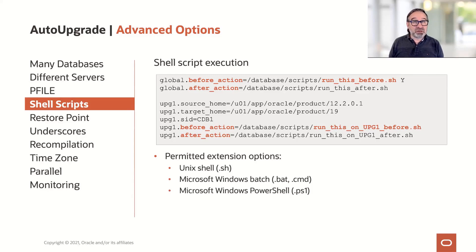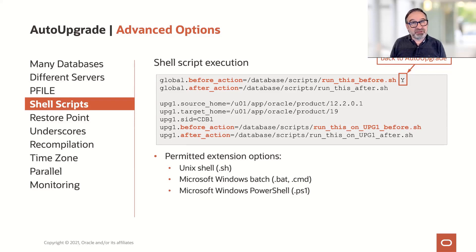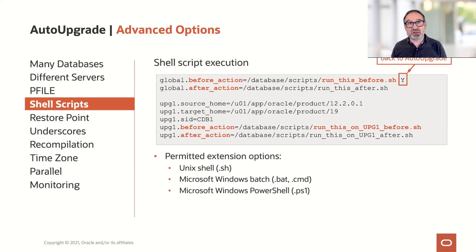What I also like a lot is the shell script execution in auto-upgrade. You can use before or after action. One of the first requests we received from a customer was: I need a script which shuts down my middleware stack on that server before upgrade and starts it up afterwards. So with before_action, you pass on a shell script. That shell script can call another shell script, which can call another SQL script — you can stack them. You can use it globally or on a per-database basis.